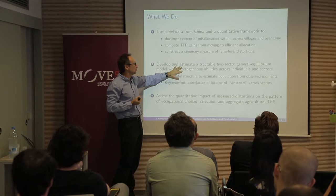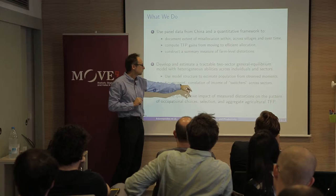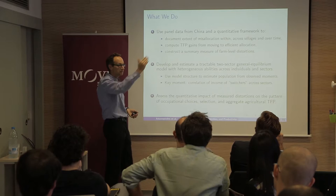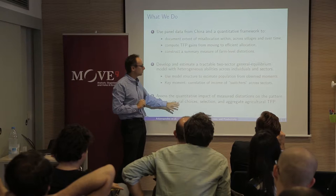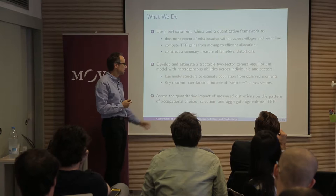The second part embeds that into a two-sector general equilibrium model where individuals will optimally decide where to locate. I'll use this model to estimate the key moments — including the correlation of income across switchers that we see in the panel to pin down the relevant correlation of abilities across sectors. Then I'll assess the extent to which these institutional aspects that generate misallocation also distort the channel of selection and how it impacts agricultural TFP.